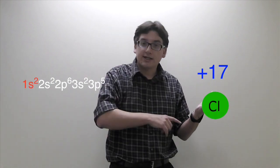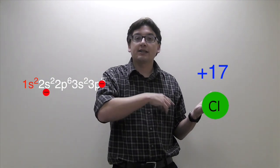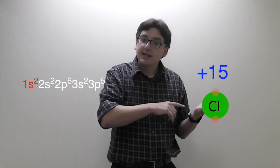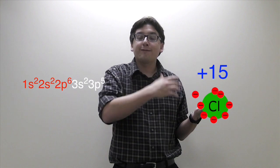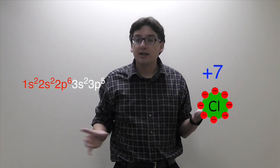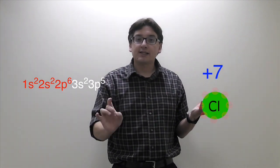Which means I'm going to put on the 1s² electrons, and now the +17's become a +15. I'm going to put the next 8 electrons on for the 2s² and 2p⁶, and that's going to leave an effective nuclear charge of +7.